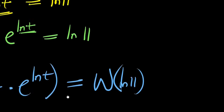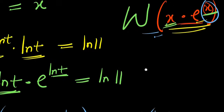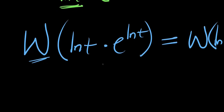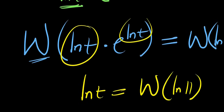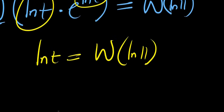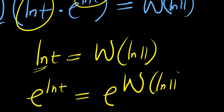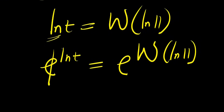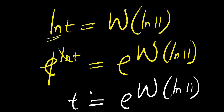Based on the property of the Lambert W function, applying it to an expression of that form gives the exponent as the output. So applying the Lambert W function here, the output is ln of t, which equals W of ln(11). Now we are solving for t, so we need to eliminate the ln. We raise e to both sides: e to the power of ln of t equals e to the power of W(ln(11)). Since e eliminates ln, we get t equals e to the power of W(ln(11)).